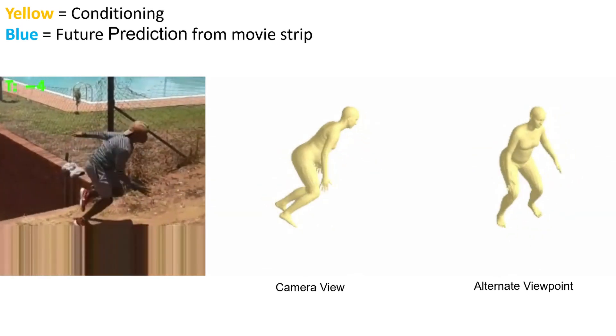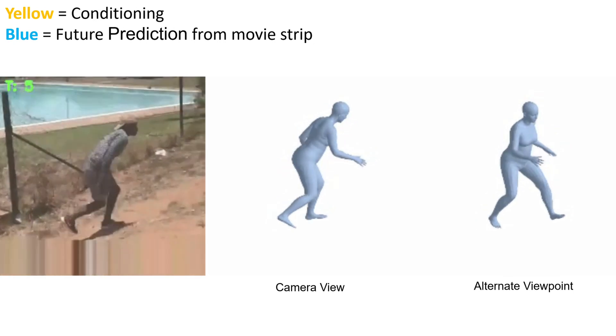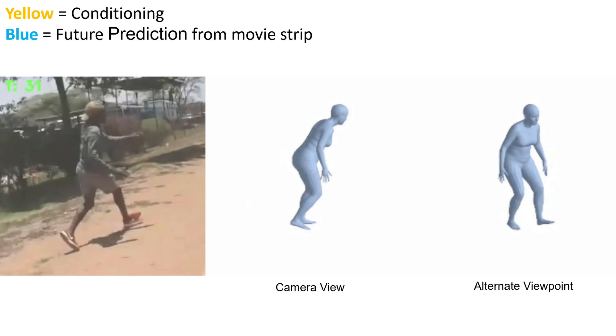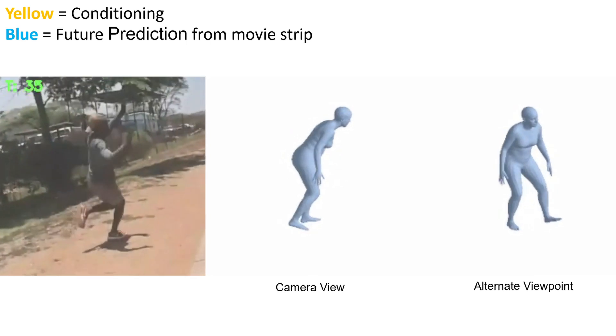Our approach is trained on videos in the wild, which do not have ground truth 3D pose annotations. This supervision comes only from the 2D reprojection and the adversarial prior.